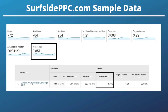Looking at a specific campaign — a Facebook campaign for our SurfsidePPC newsletter — I was trying to get people to visit my website and fill out a form. My bounce rate for that campaign is just around 6 percent, so 5.93 percent. These are great bounce rates.